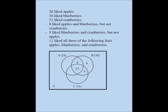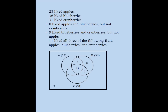So far so good. Since all students surveyed liked at least one of the three fruits, nothing goes outside the circles — that region is zero. But we still need to find the values of the three remaining spots: apples-only, cranberries-only, and apples-and-cranberries-but-not-blueberries.